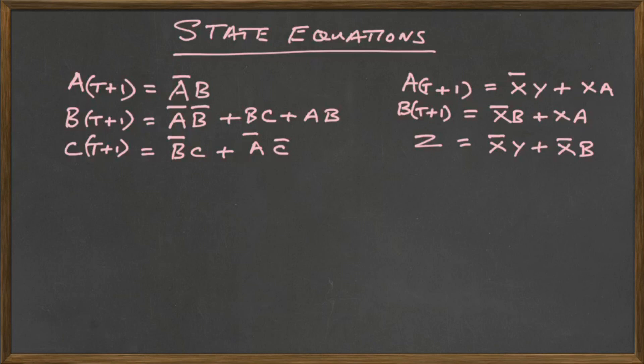We have two finite state machines, one on the right and one on the left. What can we say about these by looking at the equations? First of all we notice that the one on the left has no inputs. How can we be so sure of that?